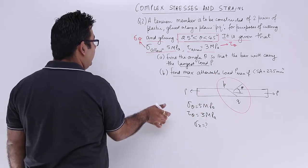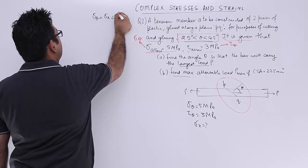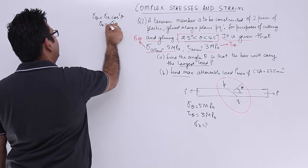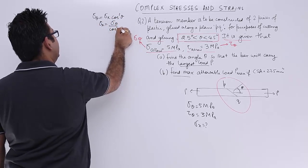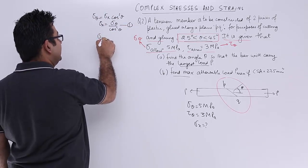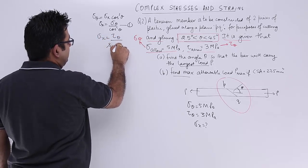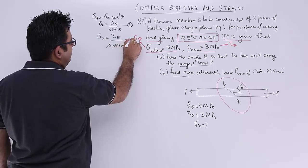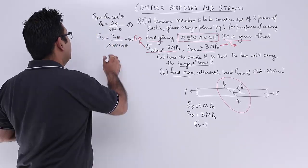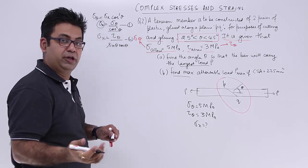Let us write down the two equations. You have sigma theta equals sigma x cos square theta, so sigma x equals sigma theta upon cos square theta. That is equation 1. For tau, you have sigma x equals tau theta upon sin theta cos theta. That is equation 2.